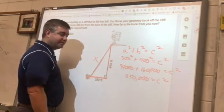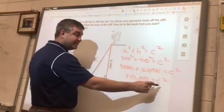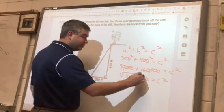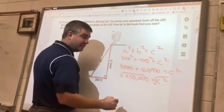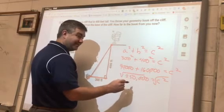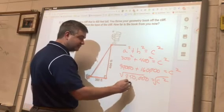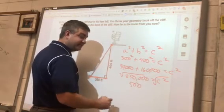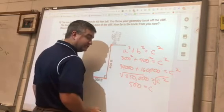Right? Big numbers, but no big deal, right? Then how do we get c squared by itself? We square root the left and we square root the right. When I take the square root of 250,000, I think I get 500. 500 is equal to c.